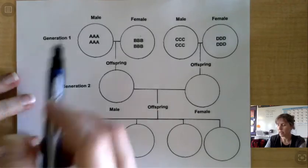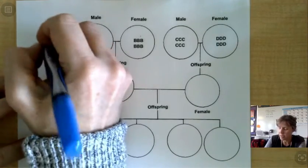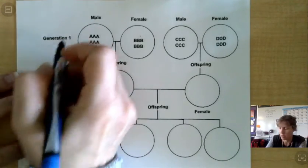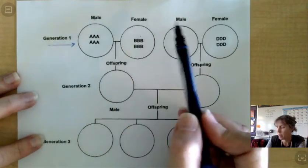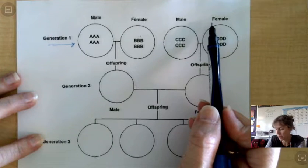What you have is Generation 1. These are the grandparents right here. These are grandparents. So we have Grandpa, Grandma, Grandpa, Grandma.